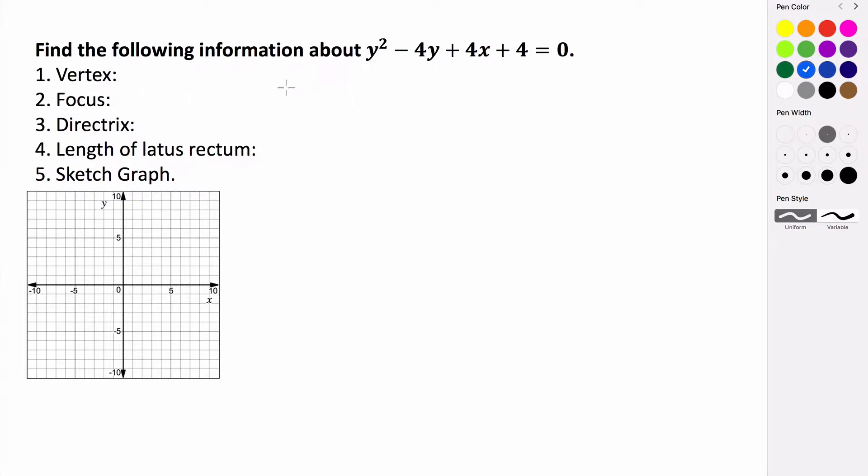For this example, we want to find this information for our given equation, y squared minus 4y plus 4x plus 4 equals 0.